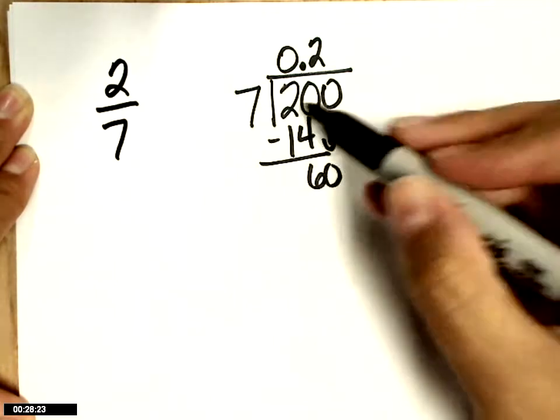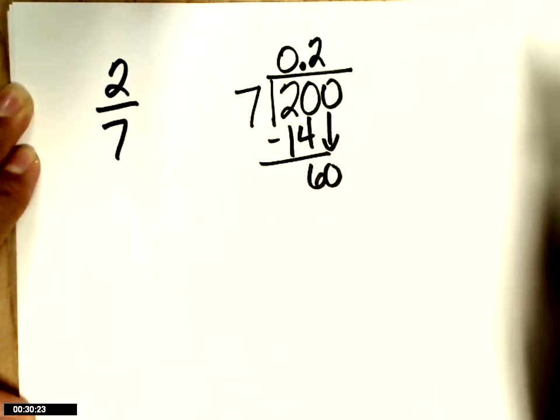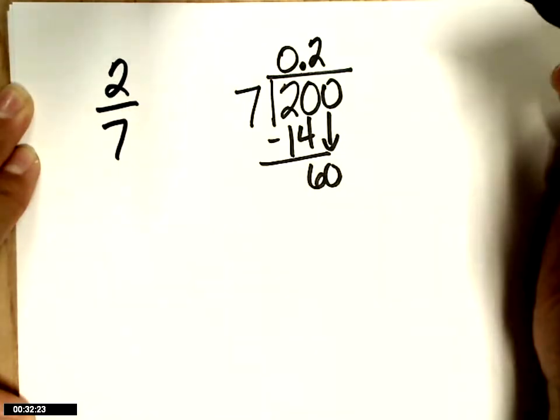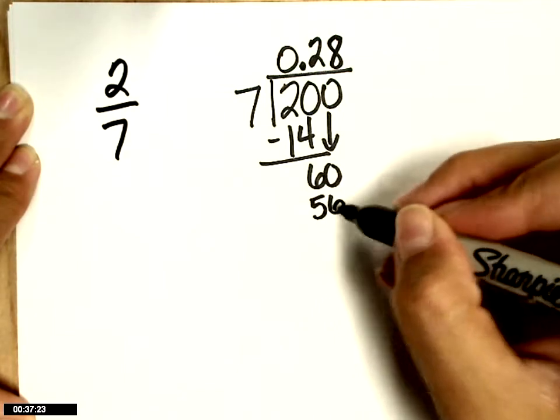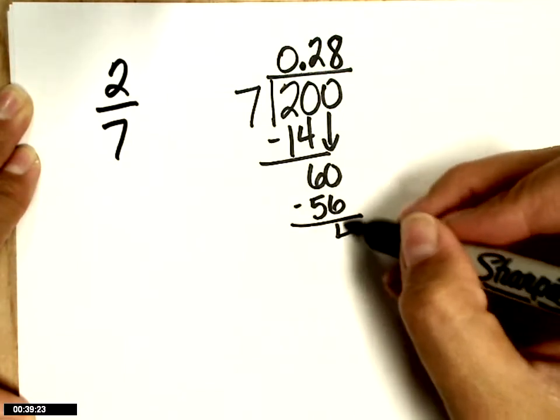bring it down. 7 into 60? 8. 8 times? What's 8 times 7? Good. Subtract, you get 4.